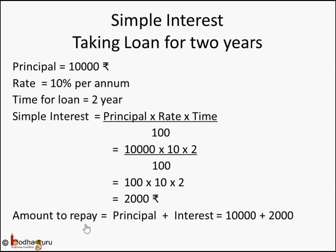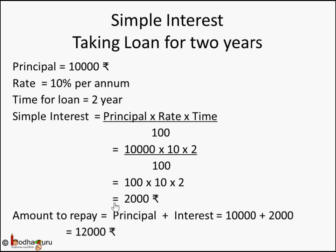Amount to repay will be principal plus interest: 10,000 plus 2,000 equals 12,000 rupees — what Sukram needs to pay after two years. After one year he was supposed to pay 11,000, but for two years it becomes 12,000. The interest for the second year also comes into the picture: 1,000 rupees for one year, 2,000 for two years, 3,000 for three years in this example.